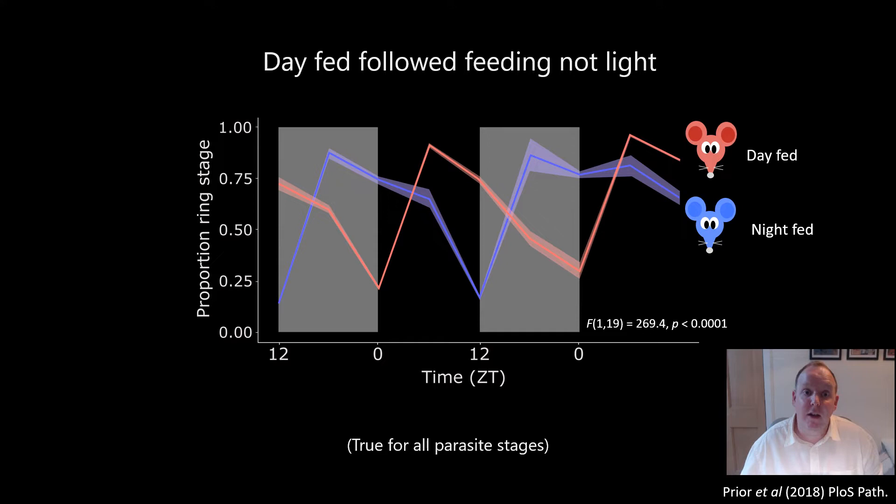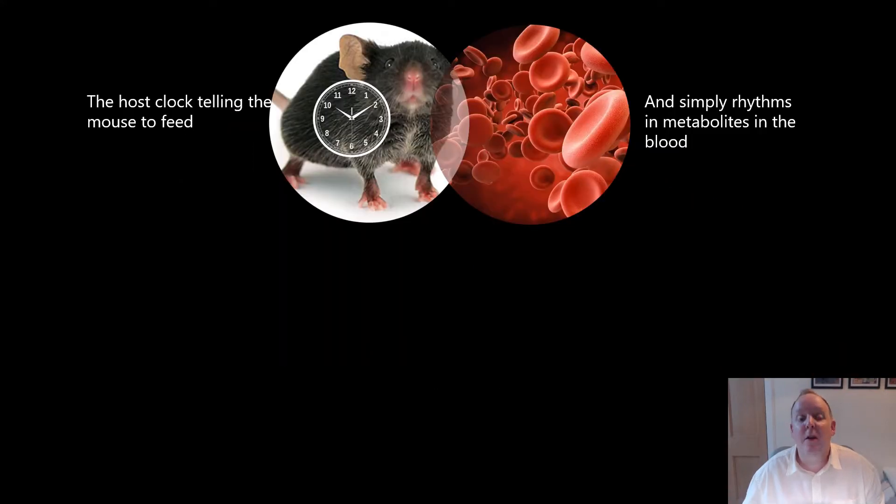When we overlay the day fed groups, however, we can see that ring stages peak in the daytime, 12 hours apart from the night fed groups. The parasites are following the feeding rhythms, not the light. So it looks like host peripheral rhythms are important.